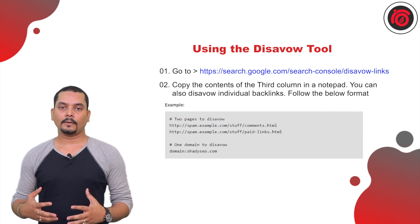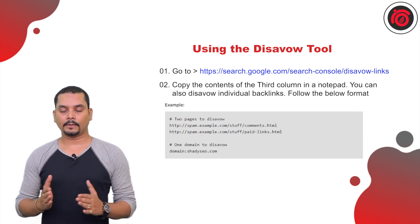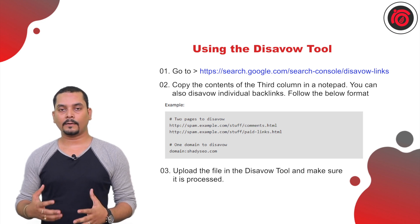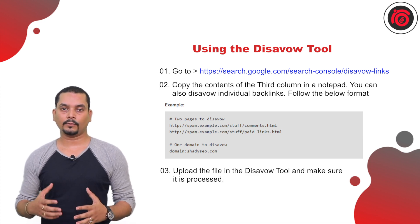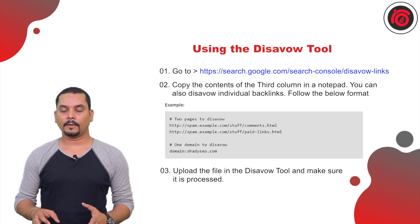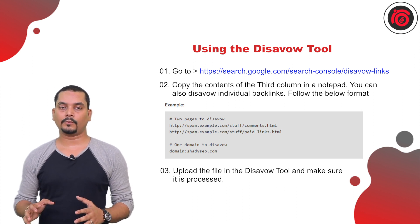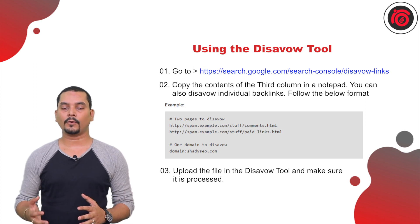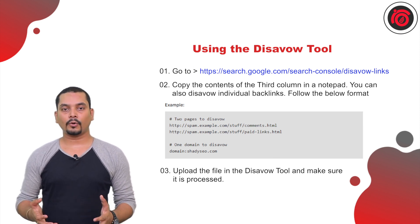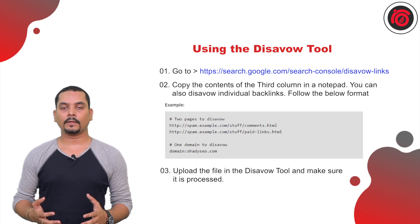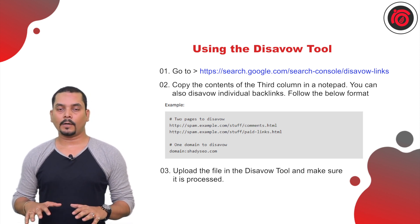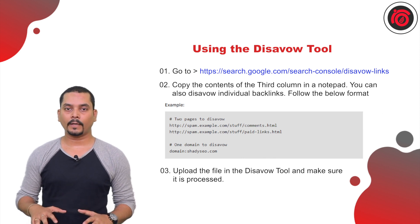Based on that, we can segregate each of the entries and then upload the entire list to the Google Disavow Tool. We then run the process to instruct Google that we want to disavow this particular set of backlinks.